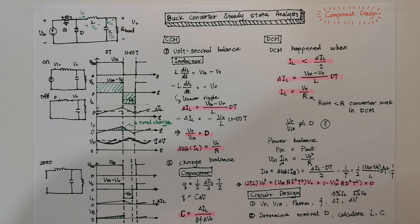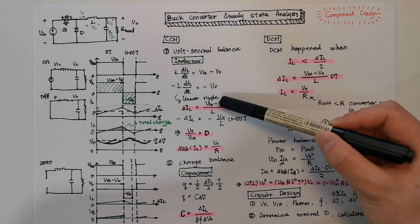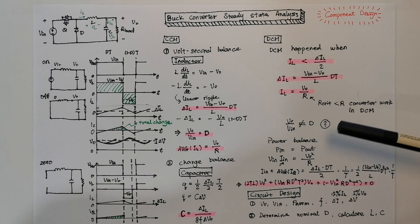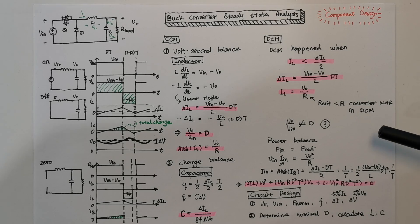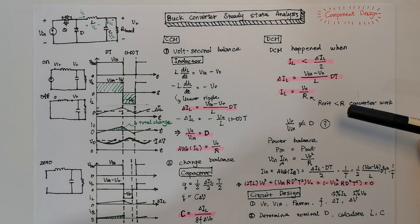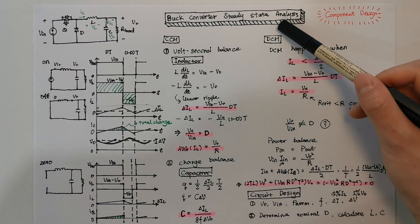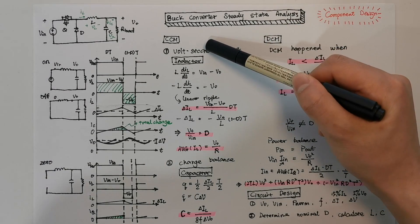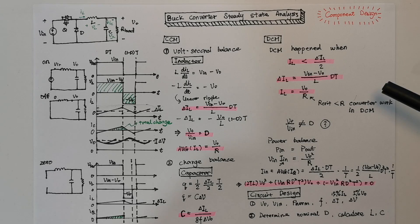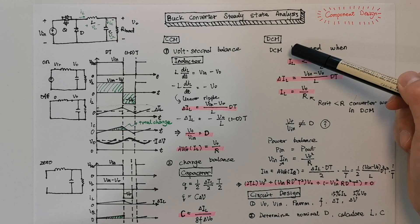There is another type of question common in exams: you are given the inductor and capacitor values and asked to check the current and voltage ripple or to calculate the output voltage. These kinds of questions are tricky because teachers can design the converter to work in DCM mode. So when you follow the CCM approach, you get the wrong answer. Be careful in exams to check whether the converter is working in CCM or DCM.